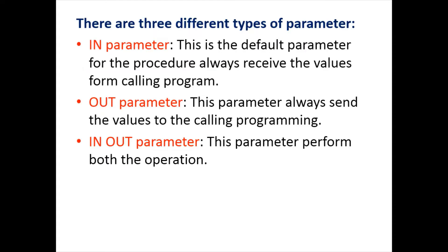There are different types of parameters for stored procedures, categorized into three types. IN parameter is the default parameter — it always receives a value from the calling program. OUT parameter always sends a value to the calling program. IN OUT parameter performs both operations — it can receive a value from the calling program and also return a value to the calling program.